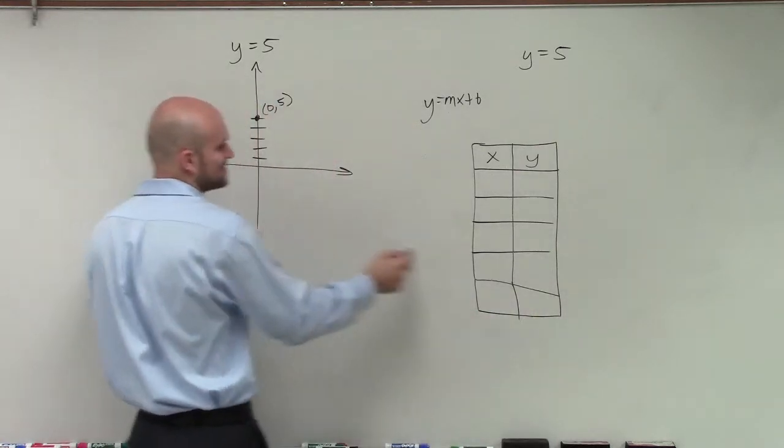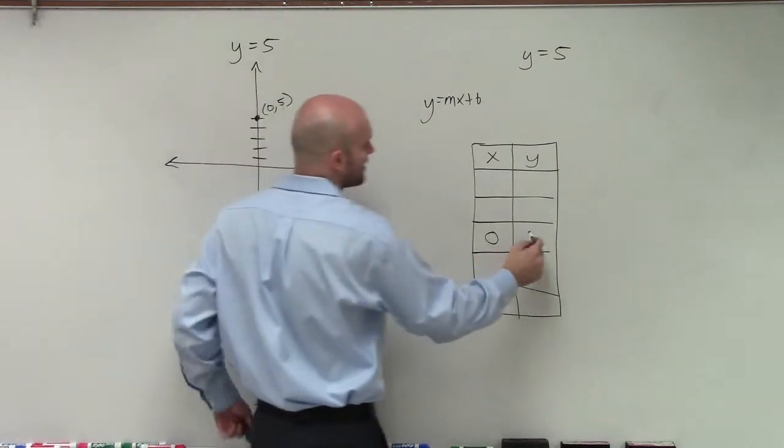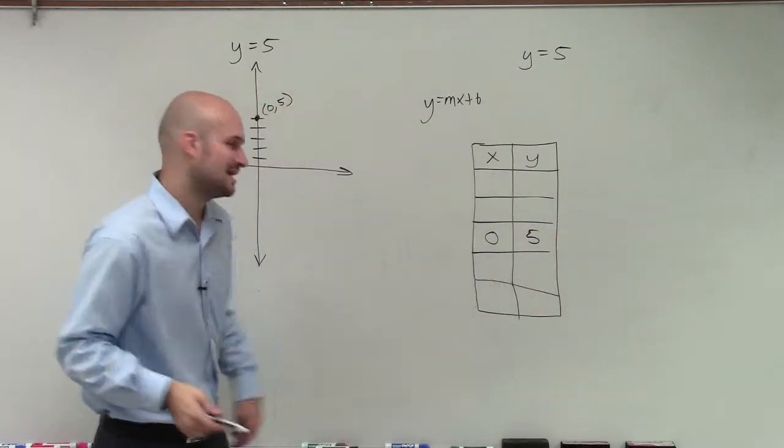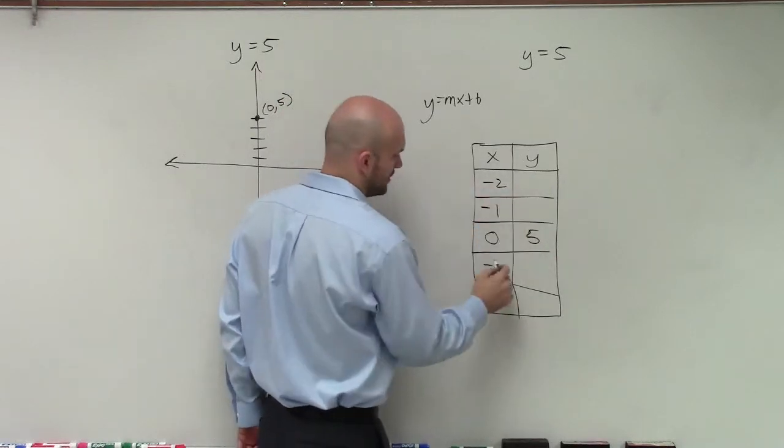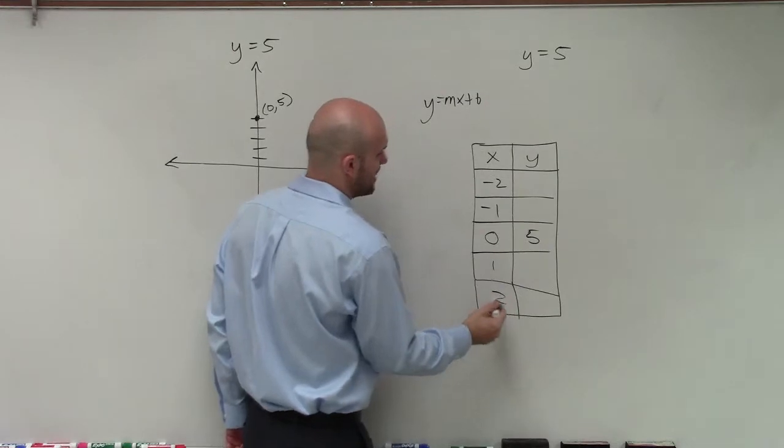So if we said the y-intercept's at 0, when x equals 0, we know that y equals 5. Then I'm just going to pick some easy numbers: negative 1, negative 2, positive 1, and positive 2.